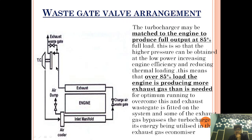For that reason the exhaust waste gate valve is provided, so that it can bypass the remaining exhaust gas when the engine is running at 100% load. At that time it will bypass the extra exhaust gas to the economizer for use. In normal operating conditions, if the engine is operating at 75% or 85% load, the turbocharger is operating at maximum efficiency and none of these valves are in use.